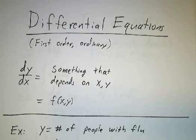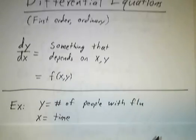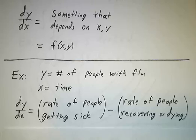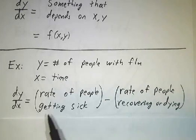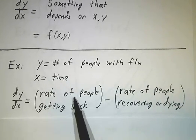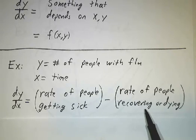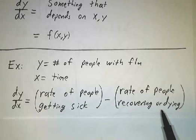So for example, let's suppose we want to understand how many people have the flu at any given time. Well, the rate at which the number of people have the flu is changing is the rate at which people get sick minus the rate at which people get not sick, either because they recover or unfortunately some of them die.